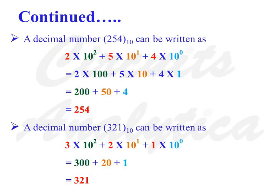As mentioned earlier, the decimal number xyz to the base 10 is represented as x into 100 plus y into 10 plus z into 1. Similarly, 254 to the base 10 can be written as 2 into 10 squared plus 5 into 10 raised to 1 plus 4 into 10 raised to 0. Another example: decimal number 321 can be written as 3 into 100 plus 2 into 10 plus 1 into 1, which is equal to 321.